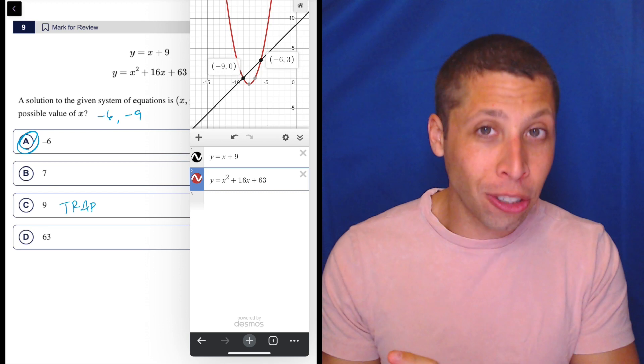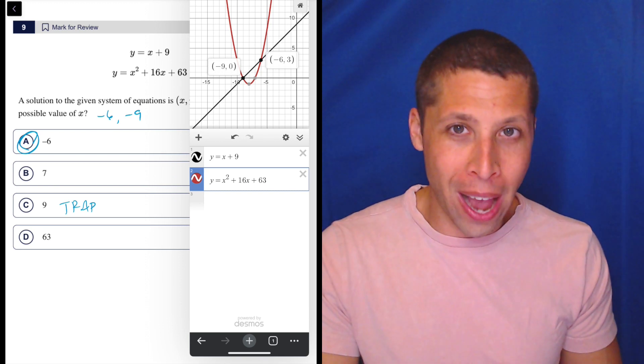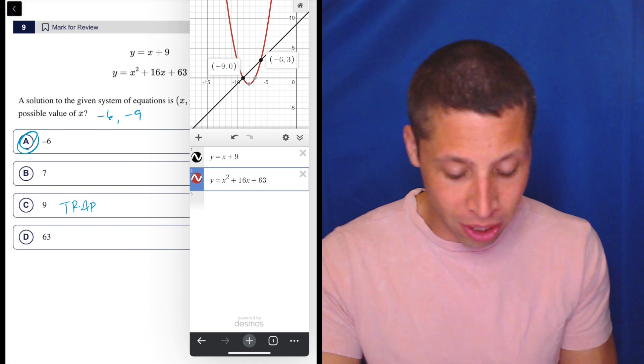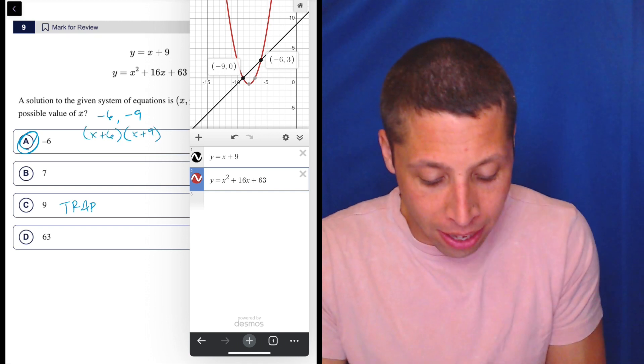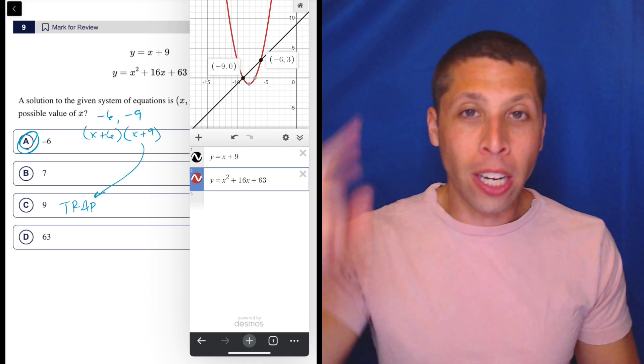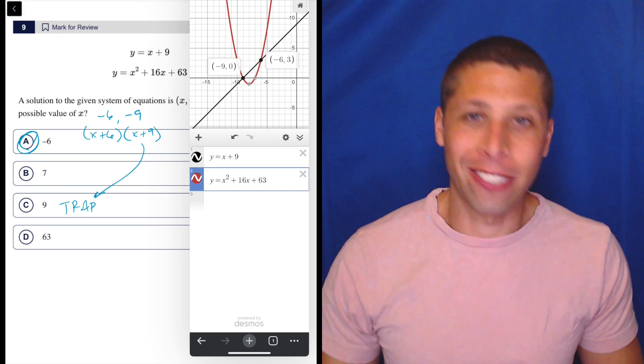When you factor, what are the factors going to be that give us these two solutions, these two points of intersection? They're going to be x plus six and x plus nine. So they're hoping that you're like, nine is bigger than six. So there you go. That's choice C.